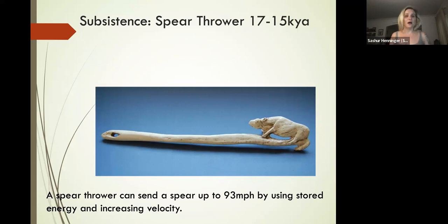We're increasing the safety of hunting by developing weapons we can throw and use from afar. But if you're going to do that, you need them to move with a great amount of velocity and force so that when they hit the animal, they actually penetrate through the skin.